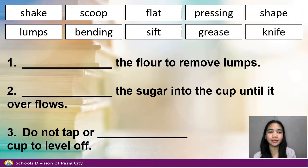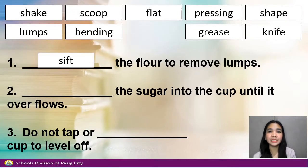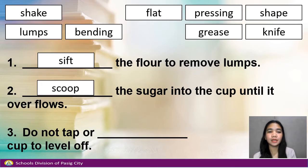Number 1. Blank the flour to remove lumps. Answer: Sift. Number 2. Blank the sugar into the cup until it overflows. Number 3.